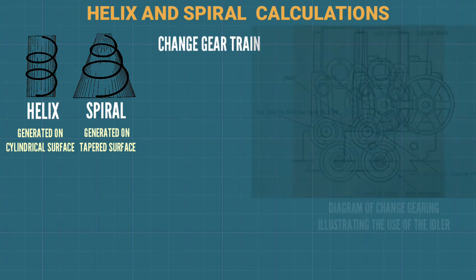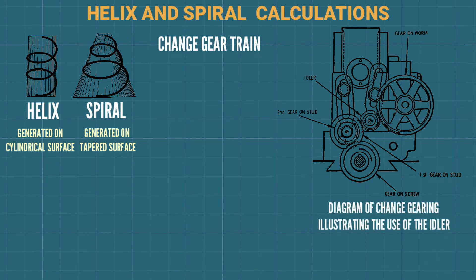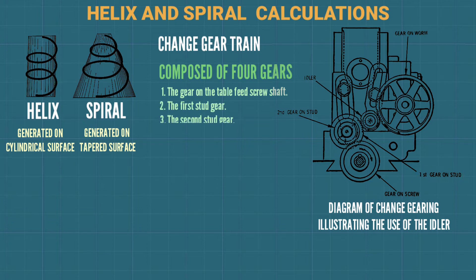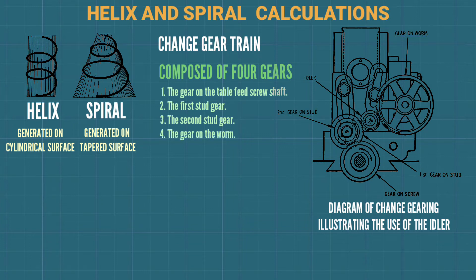Diagram of change gearing illustrating the use of the idler. Controls of four gears: first, the gear on the table feed screw shaft; second, the first stud gear; third, the second stud gear; fourth, the gear on the worm. The change gear ratio equals the pitch of the required helix divided by the lead of the machine.